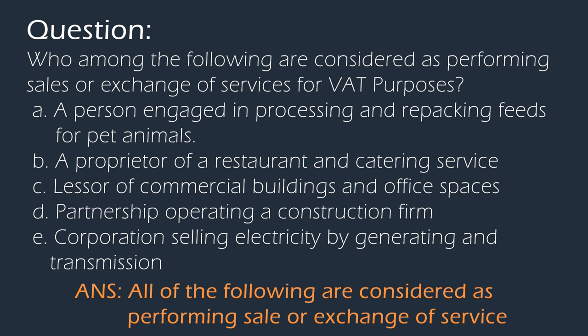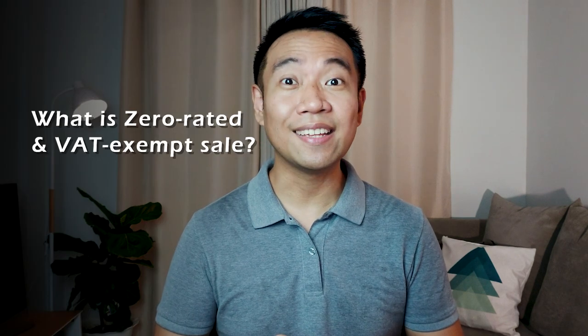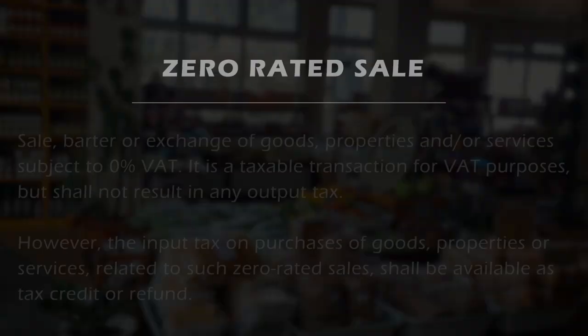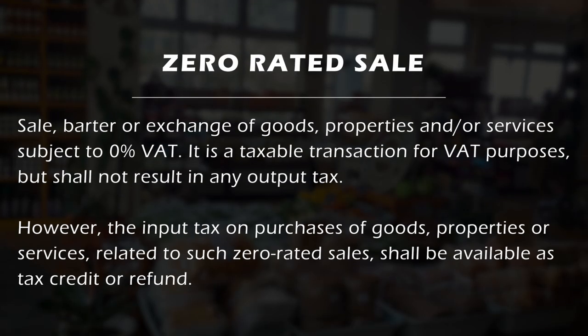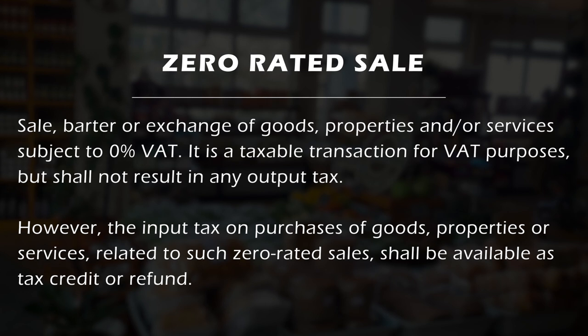The answer would be all are considered as performing a sale or exchange of service and are subject to VAT. For a complete list of the activities classified as sale or exchange of services, you can check the website of the BIR. Now, there are two special types of sales for VAT purposes. The first one is zero-rated sales, and the second would be VAT-exempt. Zero-rated sales, as the term suggests, are sale, barter, or exchange of goods, properties, and/or services subject to 0% VAT. It is a taxable transaction for VAT purposes, but shall not result in any output tax.